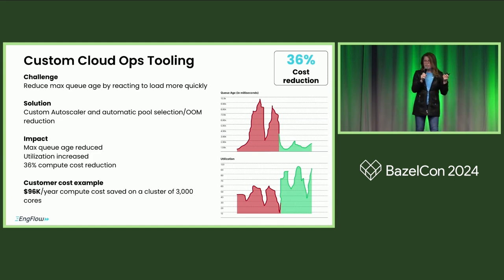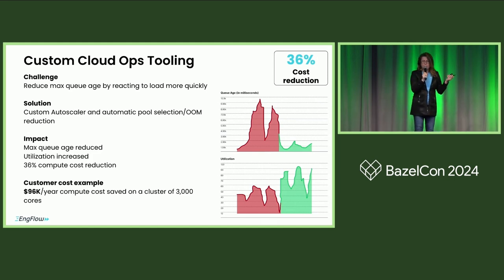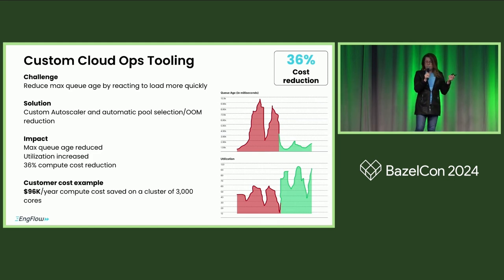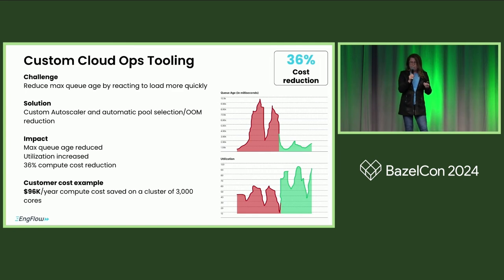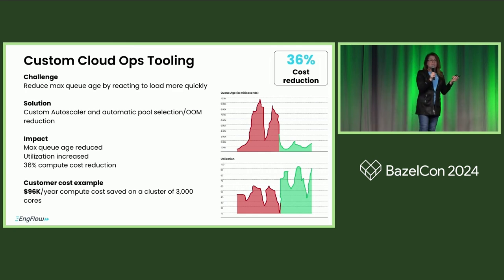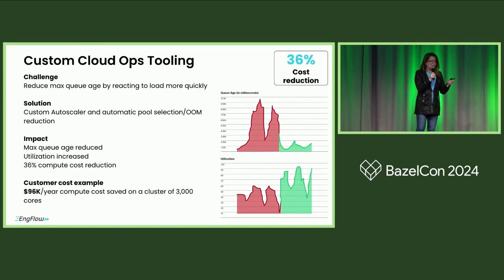We've seen this result in some of our customer clusters in improvements of 36% on cloud compute, which in some cases is quite significant — it could be millions, depending on how large your clusters are.